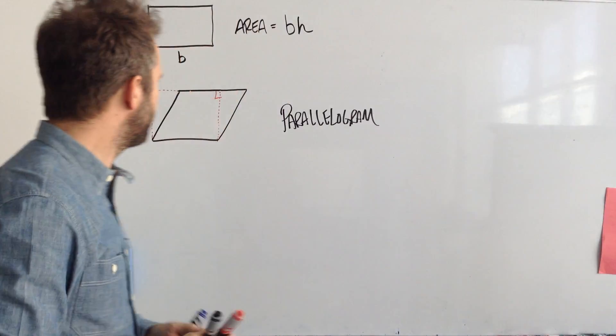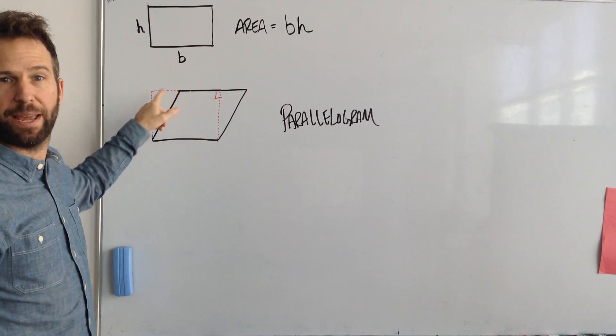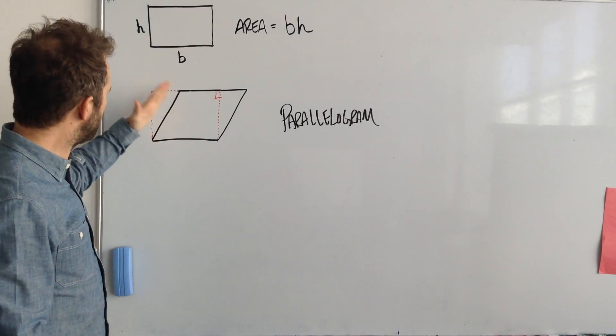You can imagine the parallelogram is simply a rectangle, you can see it by the red dashed lines, that's been pushed over.